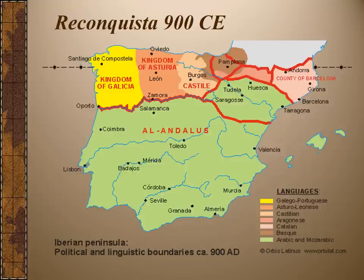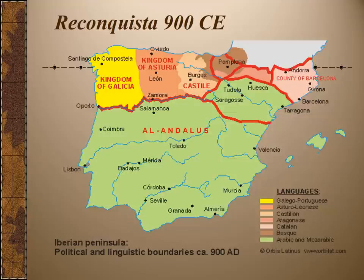Spain was not a united place, even the areas not controlled by Muslims. You can see the kingdoms in the north: the kingdom of Galicia, Asturias, Castile, Barcelona. These were separate kingdoms with their own rulers and were not unified. This is what we're looking at around the period of 900 CE.